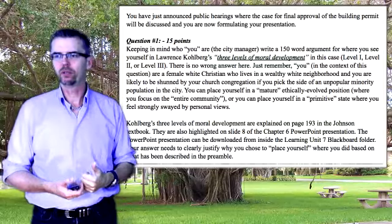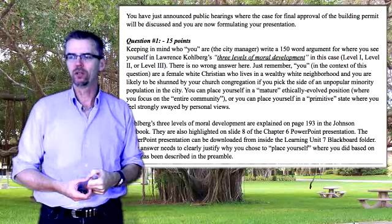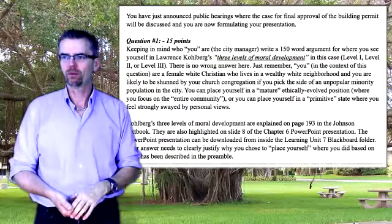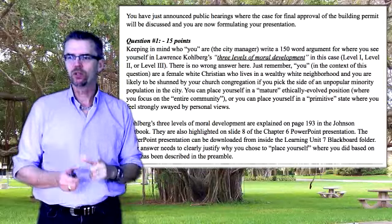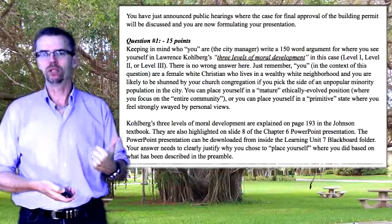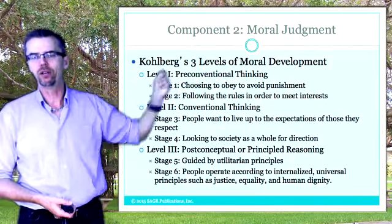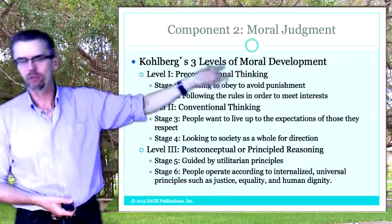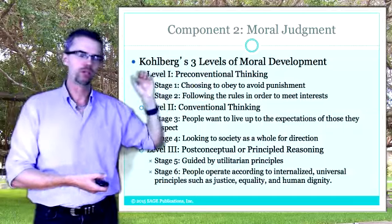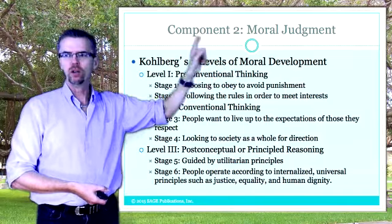Kohlberg's three levels of moral development are explained on page 193 in the textbook, and also highlighted on slide 8 of the Chapter 6 PowerPoint presentation. The PowerPoint presentation can be downloaded from inside the Learning Unit 7 Blackboard folder, right where you linked to get this video, in the Learning Objectives section. Your answer needs to clearly justify why you chose to place yourself where you did, based on what has been described in the preamble.